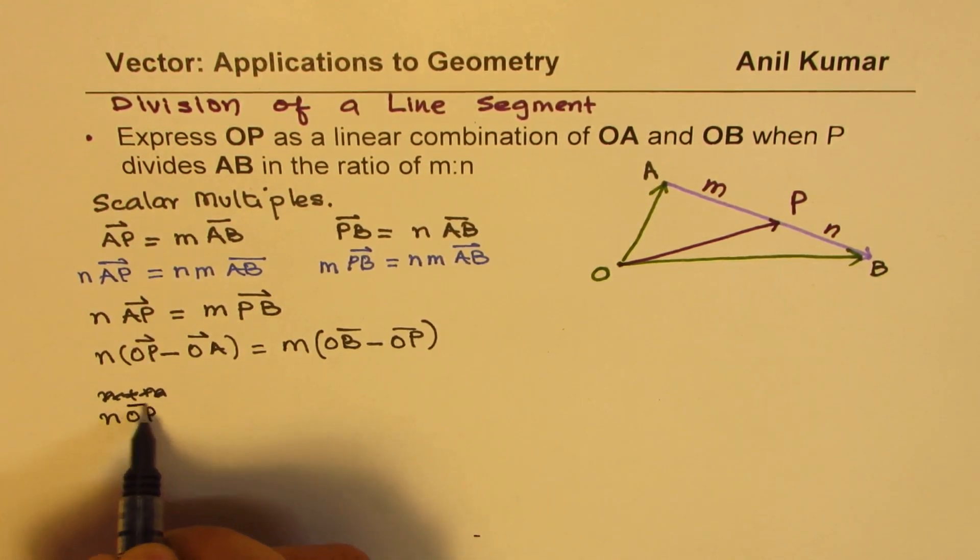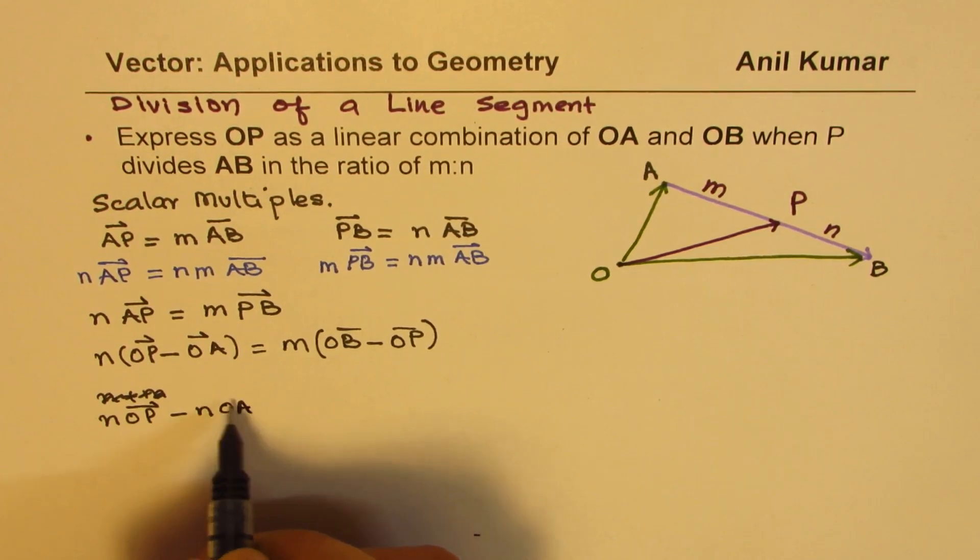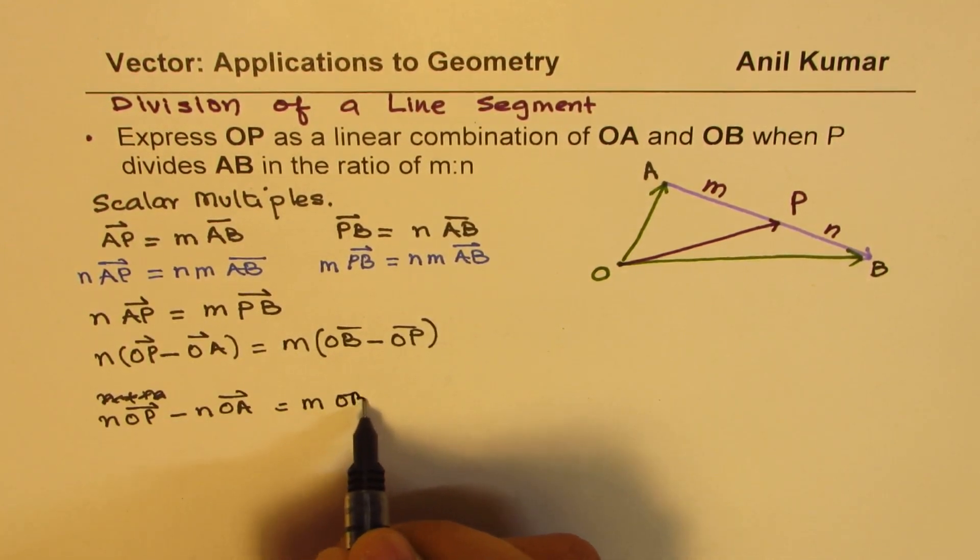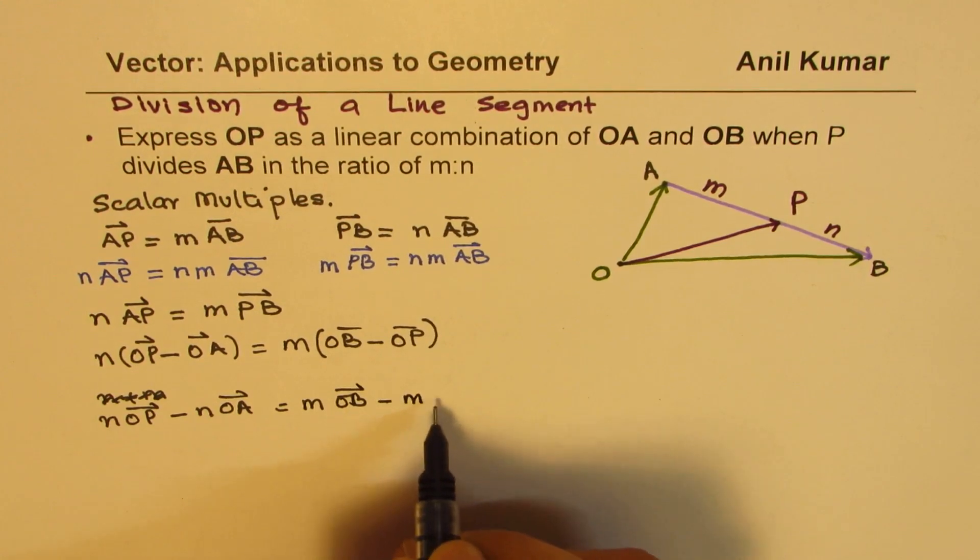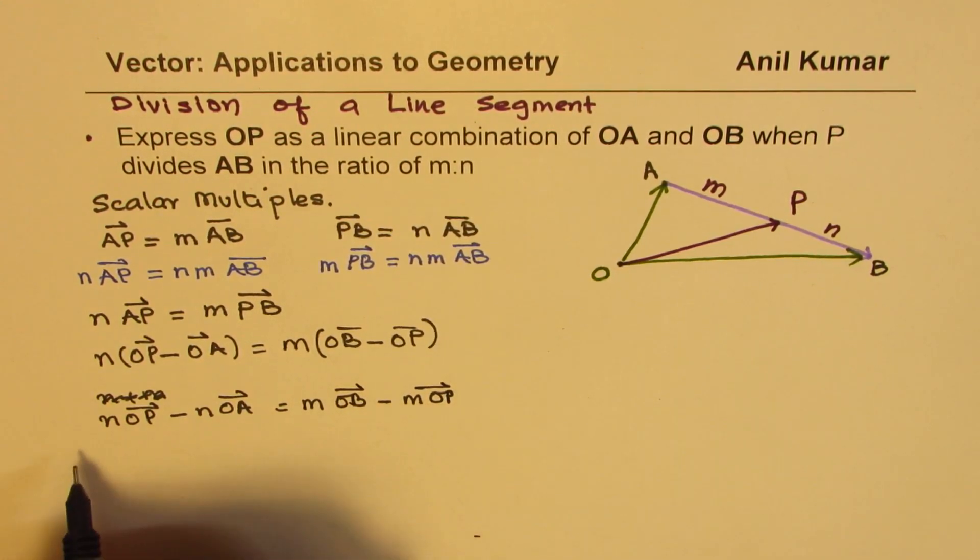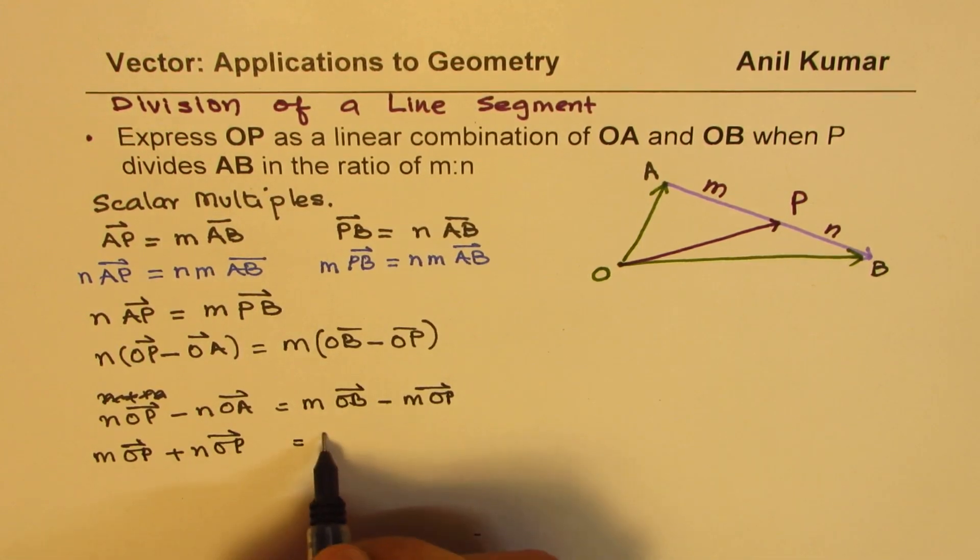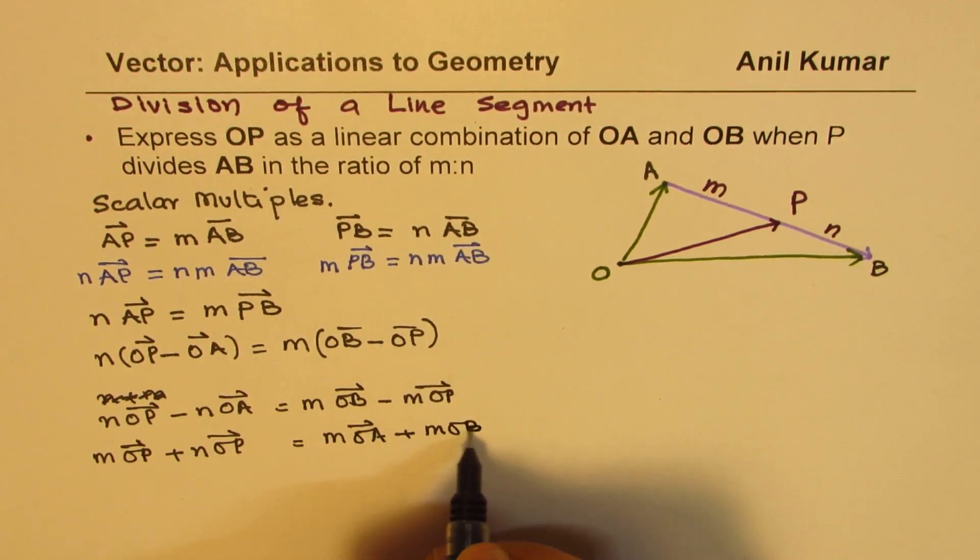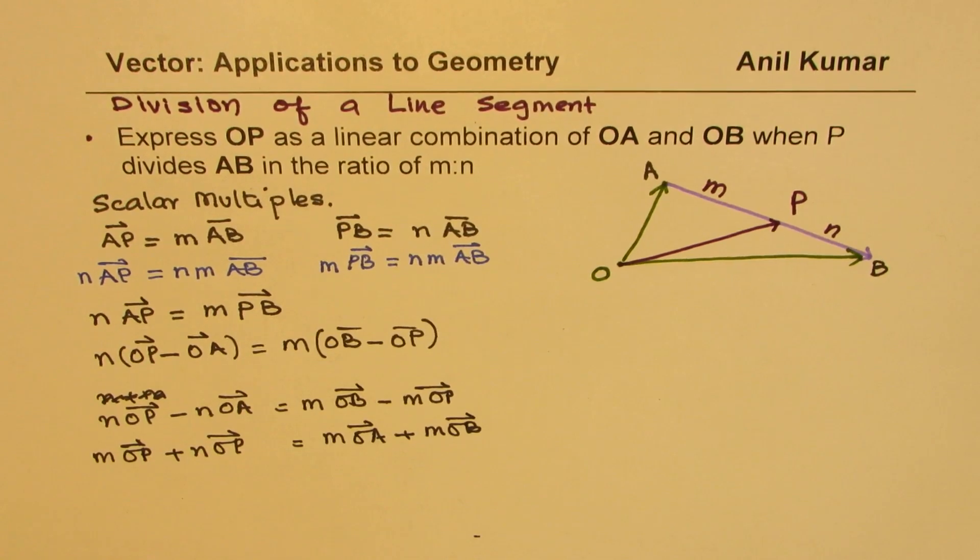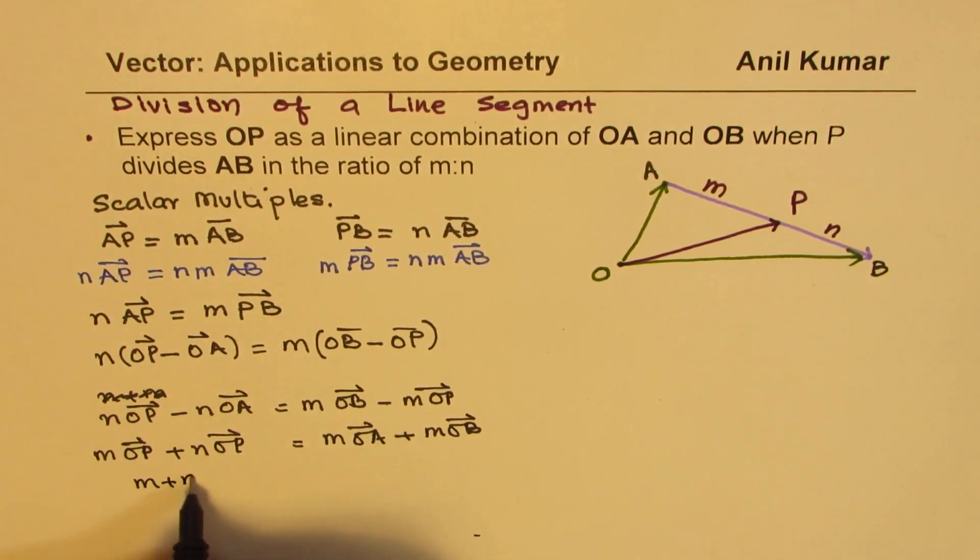N times OP minus N times OA equals to M times OB minus M times OP. Bringing it to the right, we could write this as M times OP plus N times OP is equal to N times OA plus M times OB. M and N are common, OP is common, so we could write M plus N using the associative property of addition.